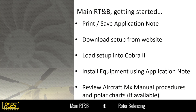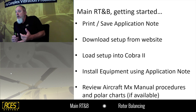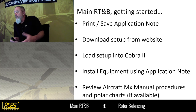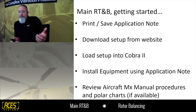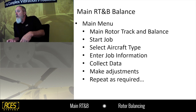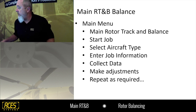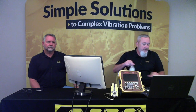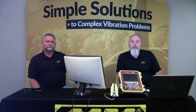Just like we talked about in tail rotor track and balance, the basic things you need to do: get your application note out so you have all the information on how to install equipment and walk through the process. You've probably already got your setup if you've done your tail rotor. We know how to load it into the Cobra 2, looked at the app note, installed our equipment, reviewed the maintenance manual, and looked at polar charts if available. We're ready to start a job.